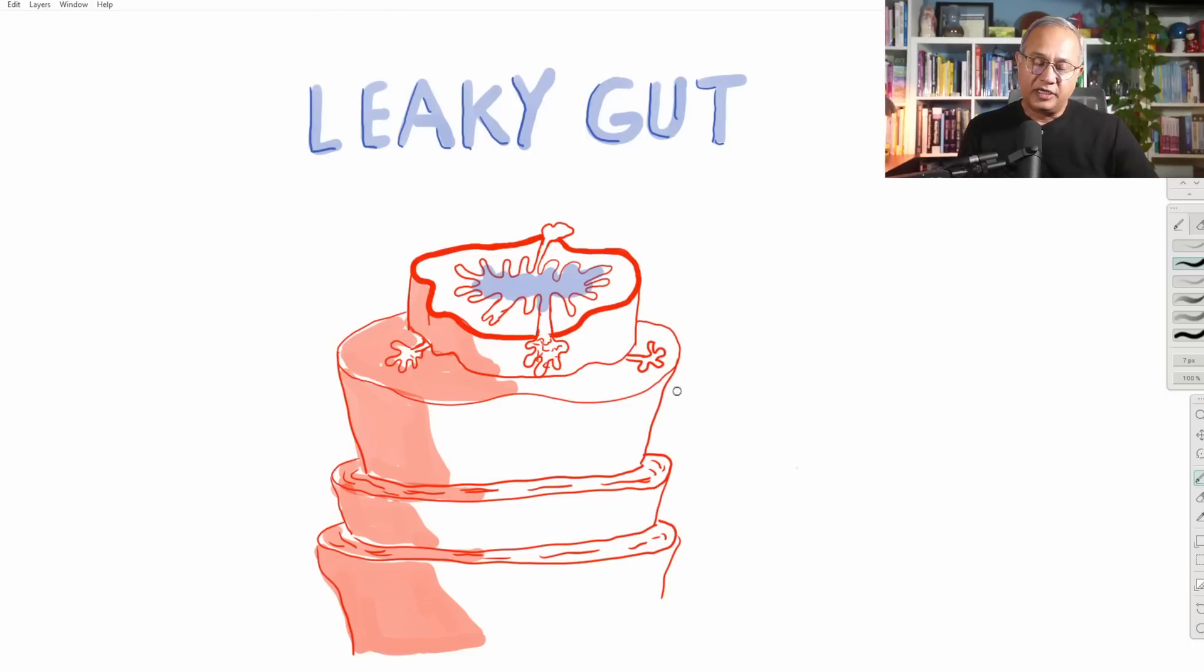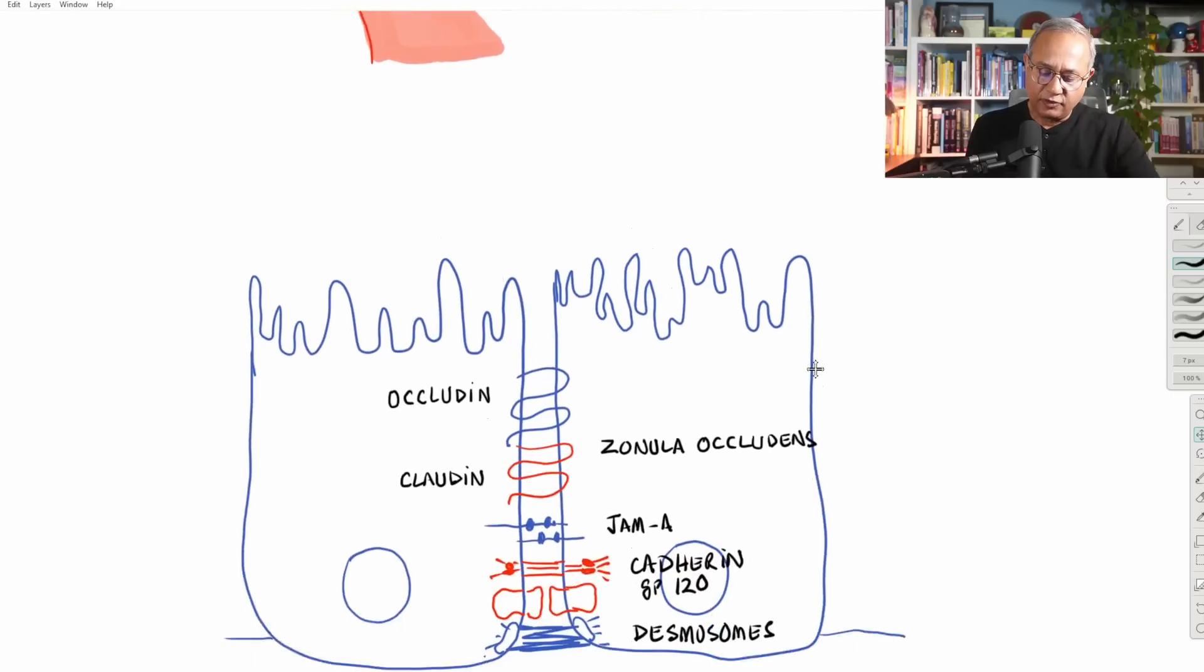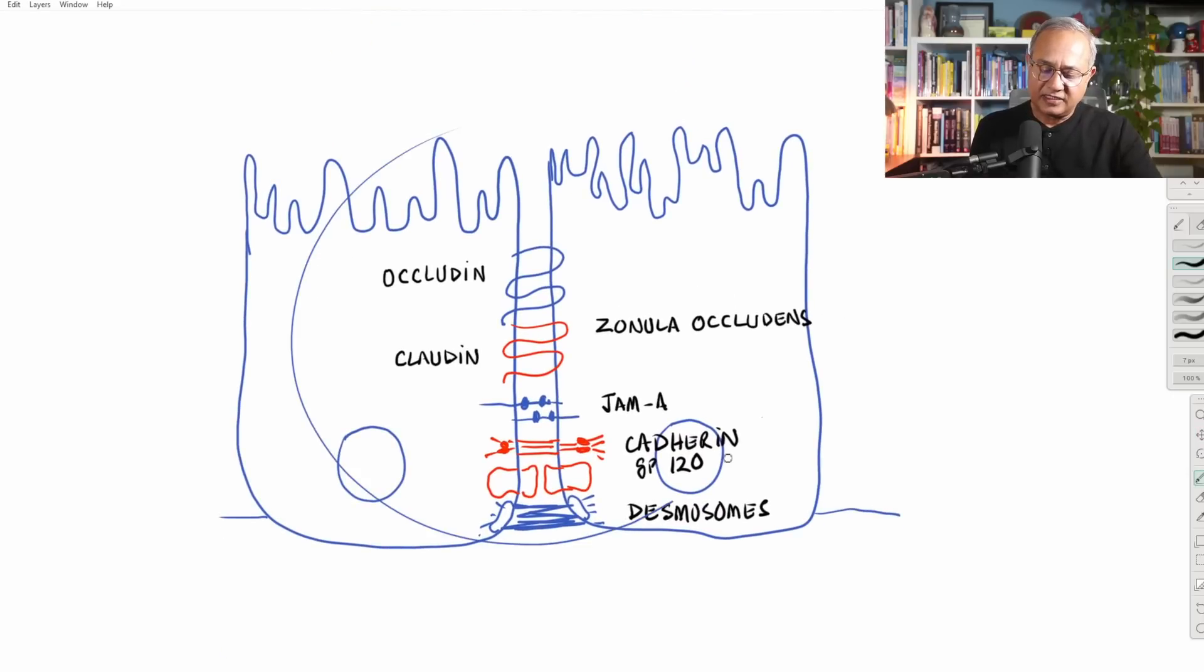Now, our body has a mechanism. So if I go here to this diagram, imagine that these are two epithelial cells. Our body has a mechanism or a way to bind the epithelial cells together so that the gap between them is reduced. That gap always stays and the gap is sufficient to allow water and some electrolytes to move through that.